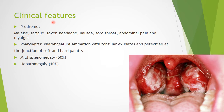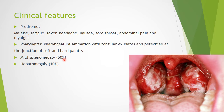The clinical features include a prodrome of malaise, fatigue, fever, headache, nausea, sore throat, abdominal pain, and myalgia. There is pharyngitis with pharyngeal inflammation and tonsillar exudates, and petechiae at the junction of the soft and hard palate. Mild splenomegaly is seen in 50% of patients, and hepatomegaly in 10% of patients.